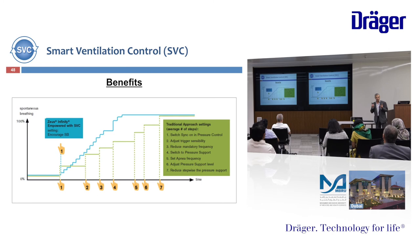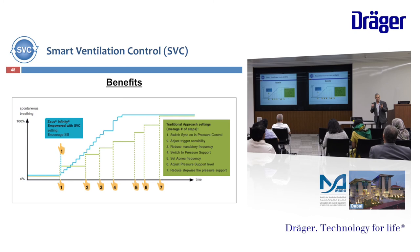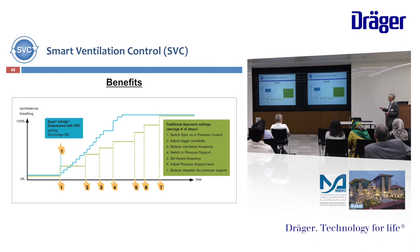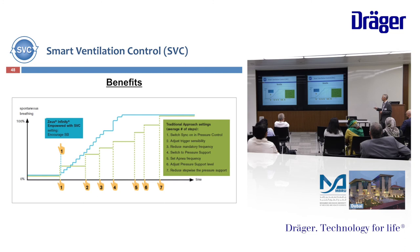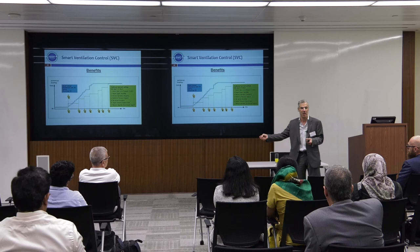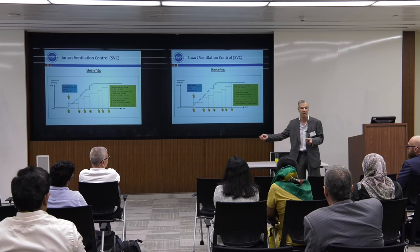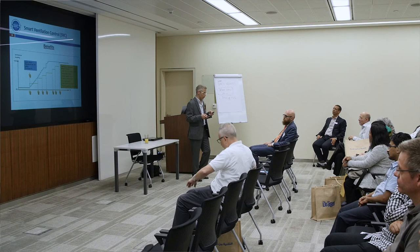And this is the benefit. Just imagine: if I have a patient who is 100% controlled and I would like to return them to 100% spontaneous breathing, what we do now is almost seven to eight steps — switch to synchronized pressure control, adjust trigger sensitivity, reduce mandatory frequency, switch to pressure support, set apnea frequency, adjust pressure support level, then reduce pressure support step by step. I'm doing this if I would like to return the patient's spontaneous breathing while on the ventilator. With the Zeus machine and smart ventilation control, I can do it just with one step.